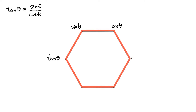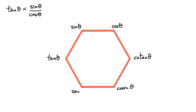To figure out what goes on the rightmost vertex, you simply go across from tangent and you get cotangent — very easy to remember. Now to remember what goes at the bottom, everything on the right-hand side starts with the letter C. So this here is cosecant of the angle theta, and at the end you're simply left with secant of the angle theta. Super easy to remember.